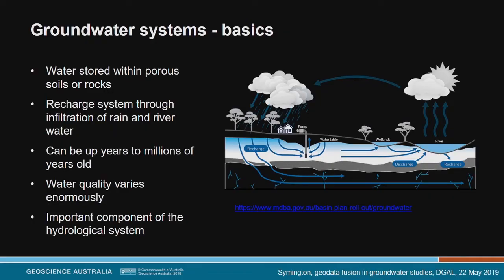Groundwater is water that's stored within soils and within rocks, stored either within pores — the little spaces in between grains — or in fractures in the rocks. Groundwater enters the system through a process called recharge, which can come from rainwater, but it can also run in from rivers, snowmelt, and other sources.